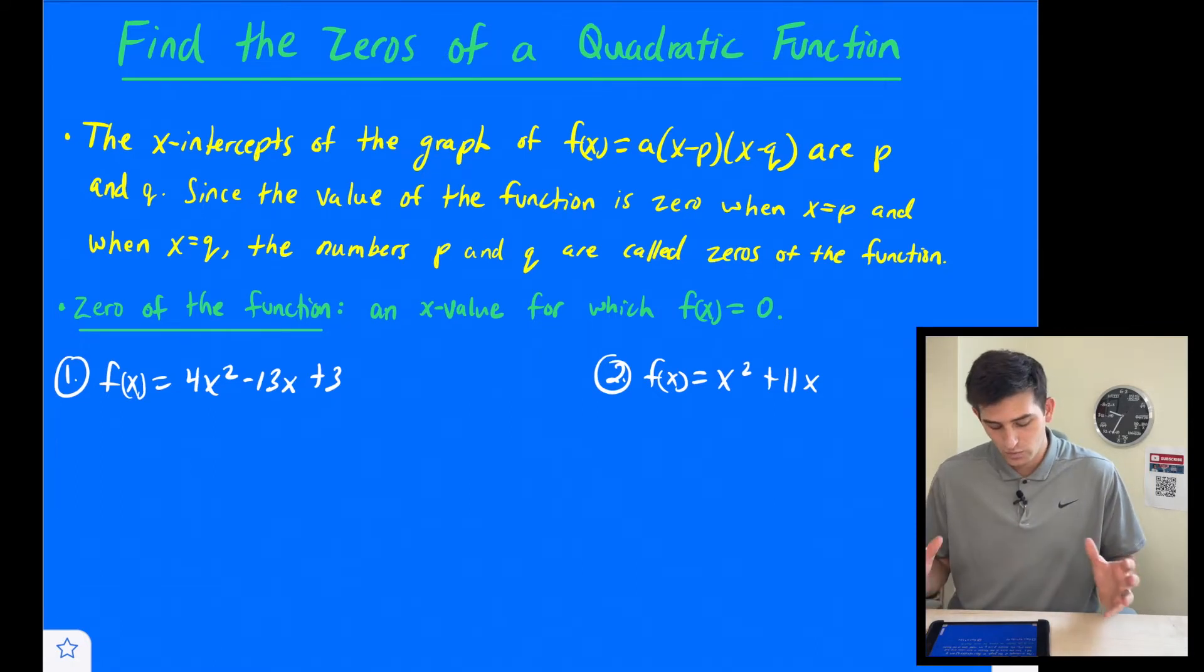Okay, so we can find this by graphing if we wanted to graph the equation and just see where the x-intercepts are. Those are also the zeros of the function. Or we could use really any other method that we want to solve a quadratic. And in this video, we're going to use factoring.